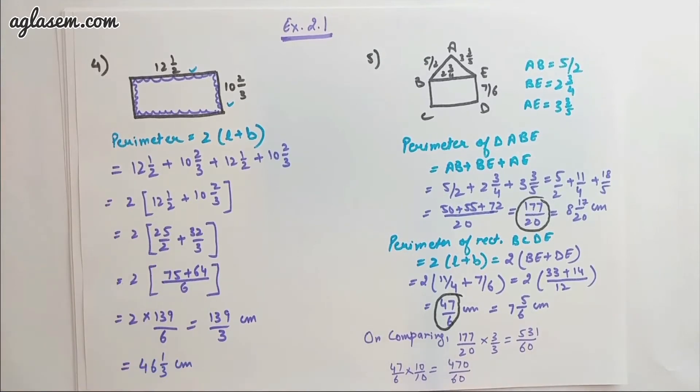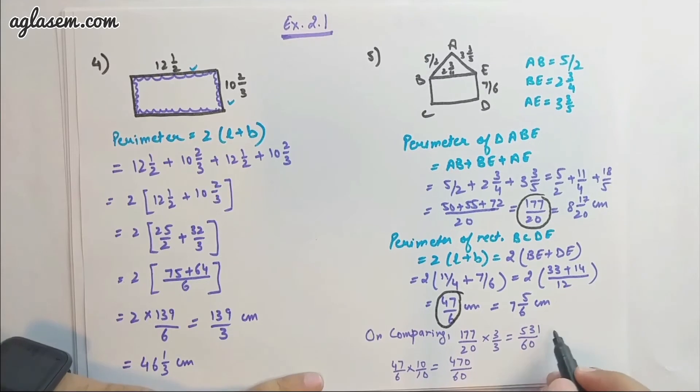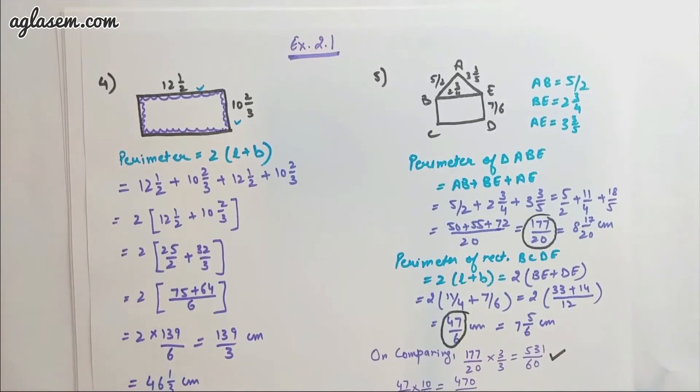Now you can easily make out which is greater and which is smaller. Obviously this is greater, so perimeter of triangle ABE is greater than perimeter of rectangle BCDE.